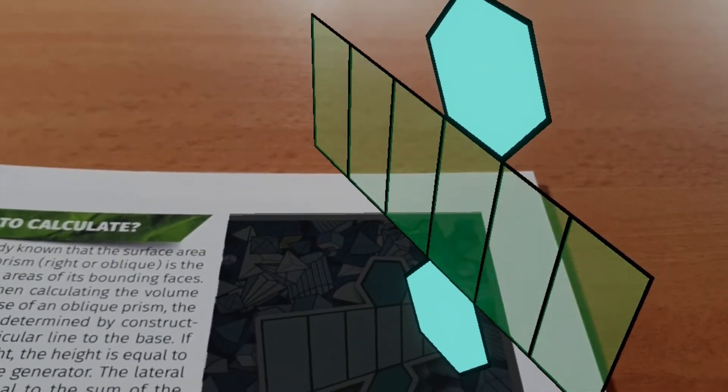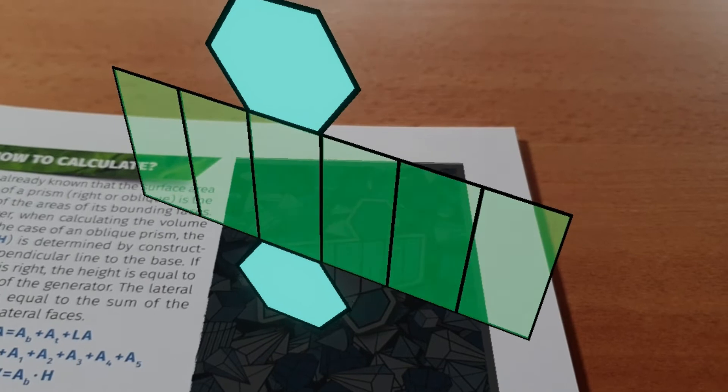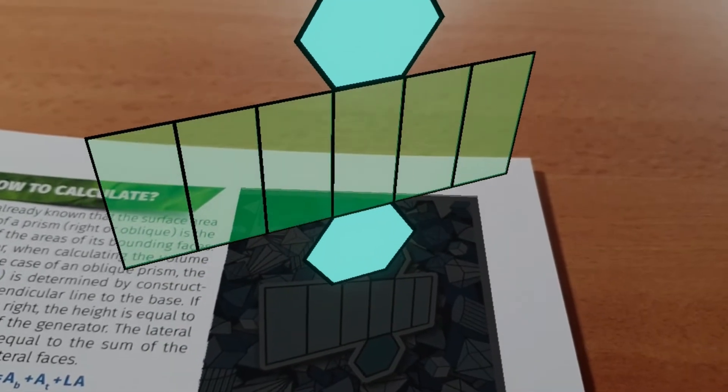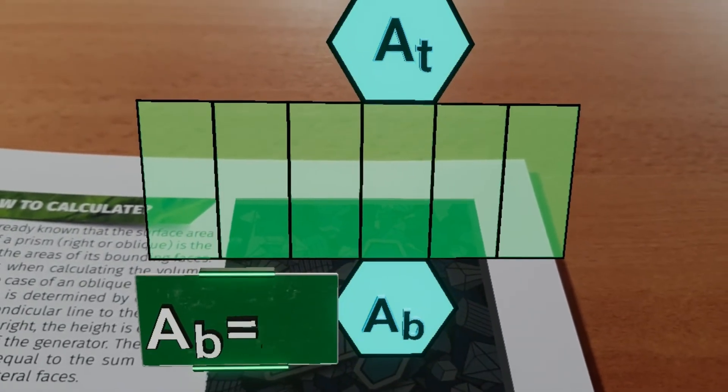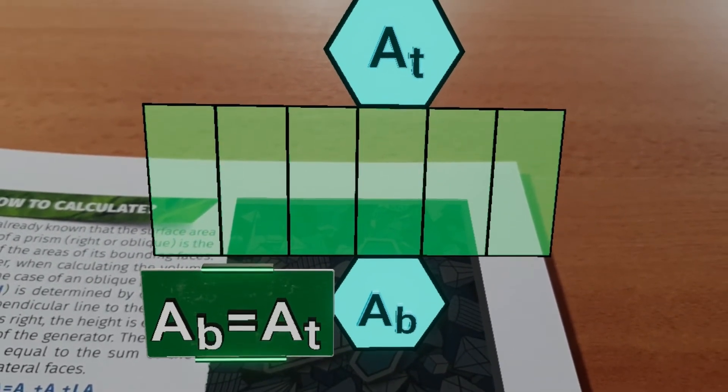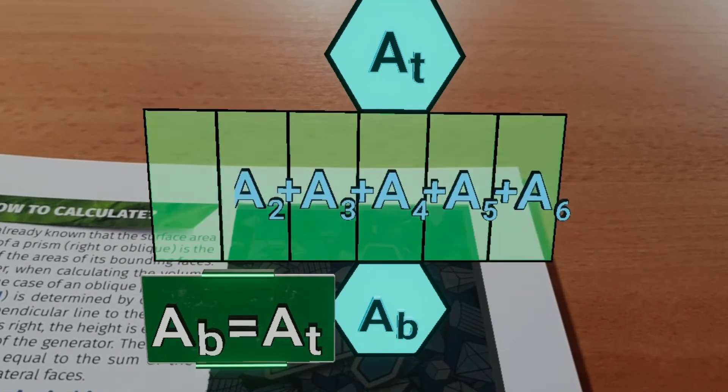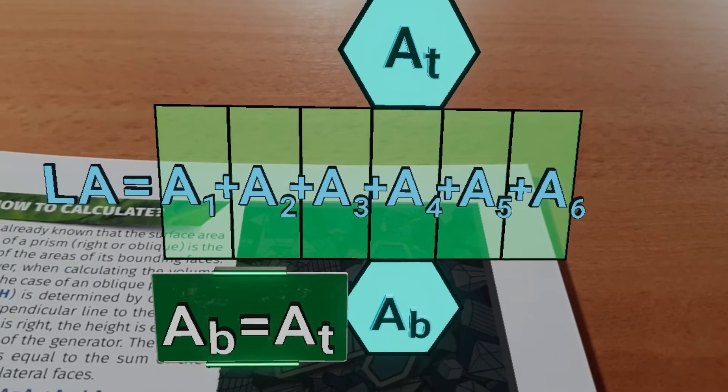The surface area of the prism can be easily calculated from the resulting plane figure. Since the bottom and top bases are congruent, their areas are the same. The sum of the areas of the lateral faces is the area of the lateral surface.